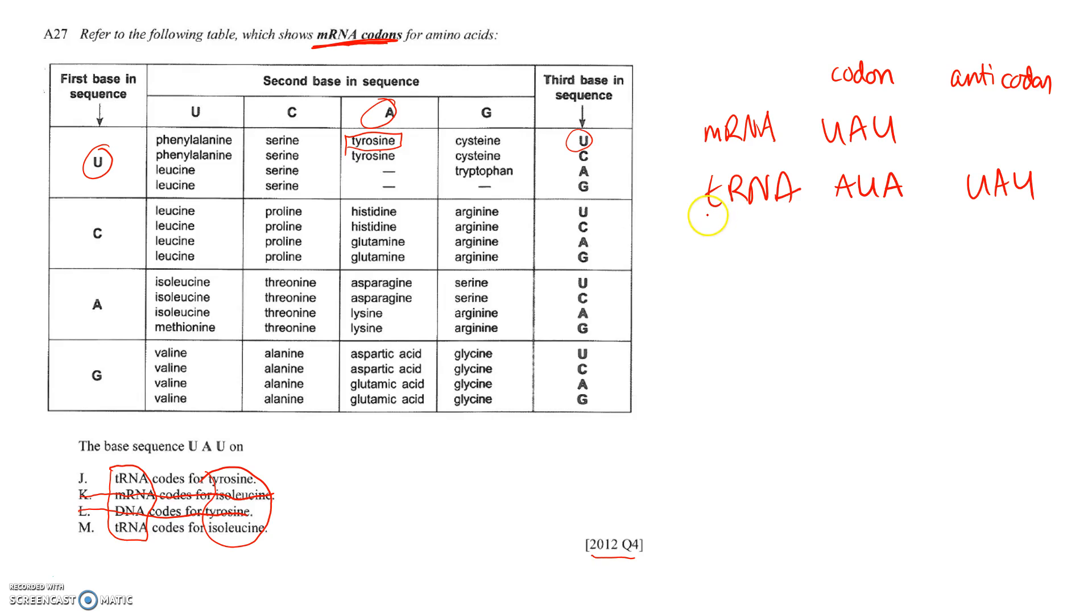If we're talking about tRNA having a sequence of U, A, U, then the codon we're actually looking for is A, U, A that's complementary to that. Now we're using isoleucine. If it's tRNA it's not coding for tyrosine, it must be coding for isoleucine. So M is the correct answer.